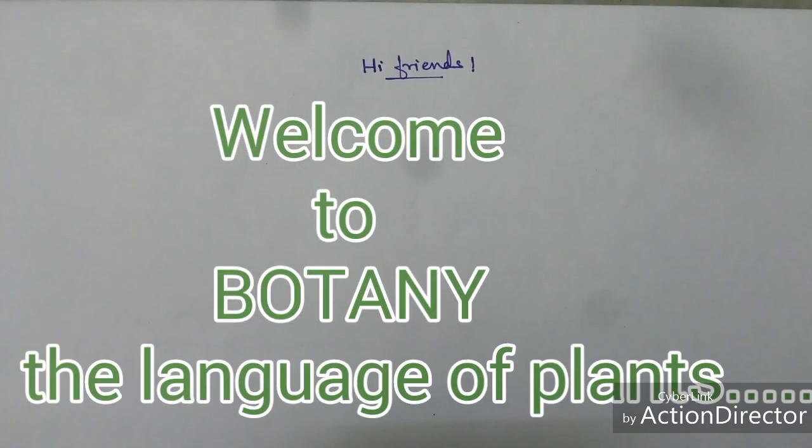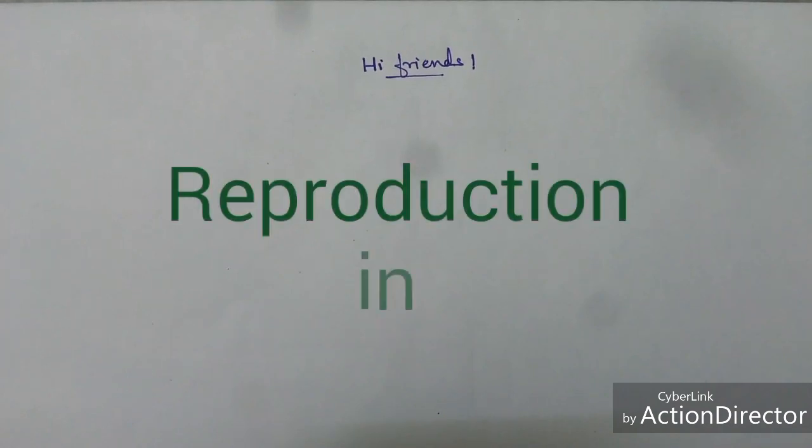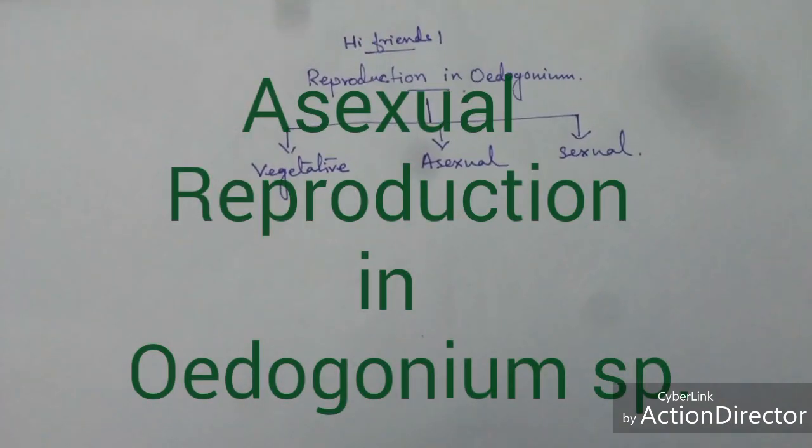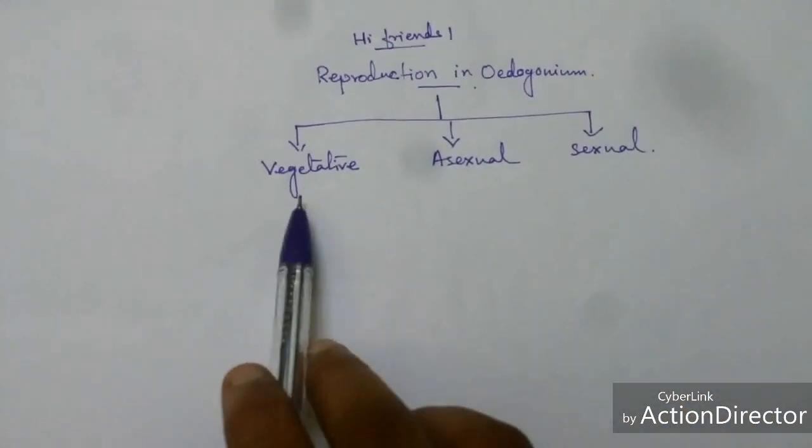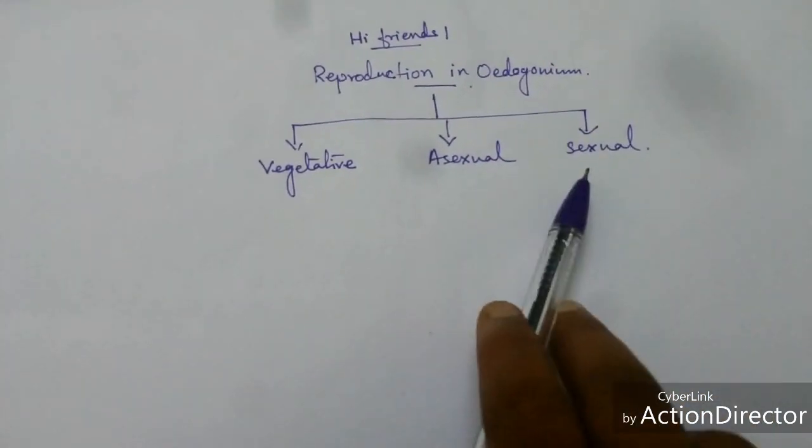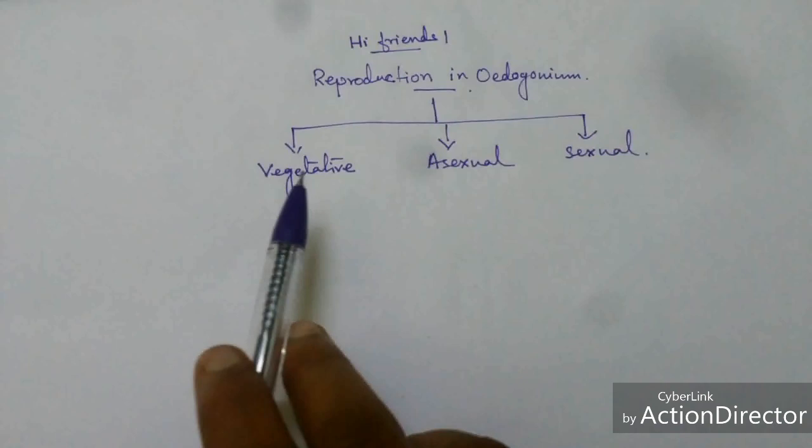Hi friends, today's topic is reproduction in Oedogonium. In Oedogonium, reproductions occur by three types: vegetative, asexual, and sexual.